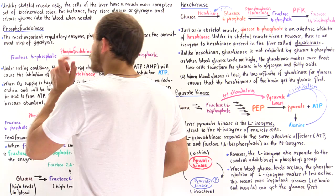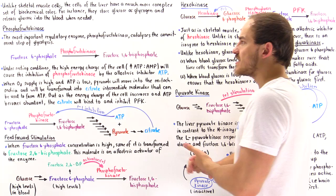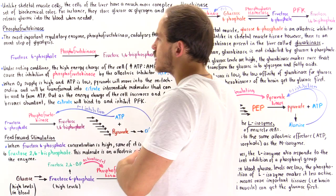Phosphofructokinase is the most important regulatory enzyme because it catalyzes the irreversible commitment step. Once this step takes place, the fructose 1,6-bisphosphate that is transformed from fructose 6-phosphate by phosphofructokinase has to go on and complete the process of glycolysis.